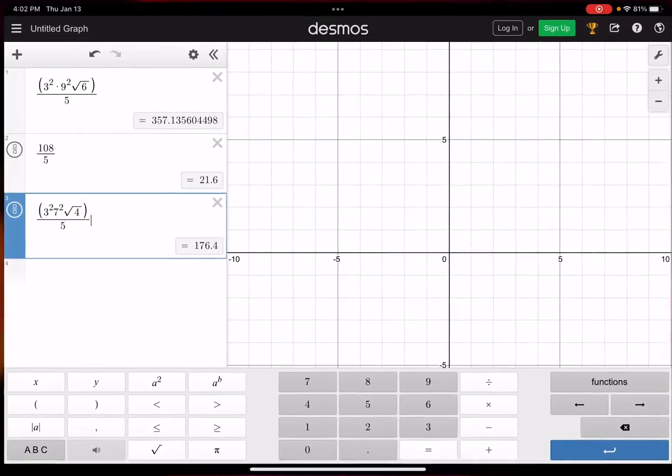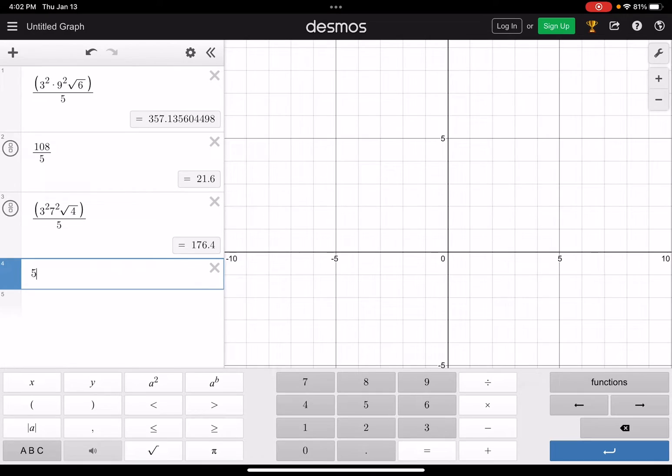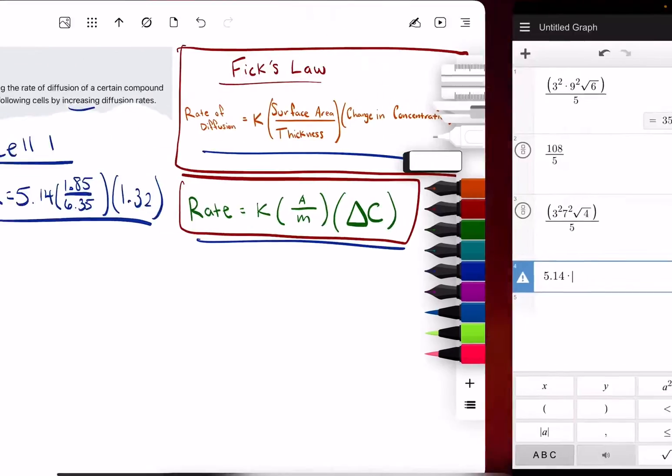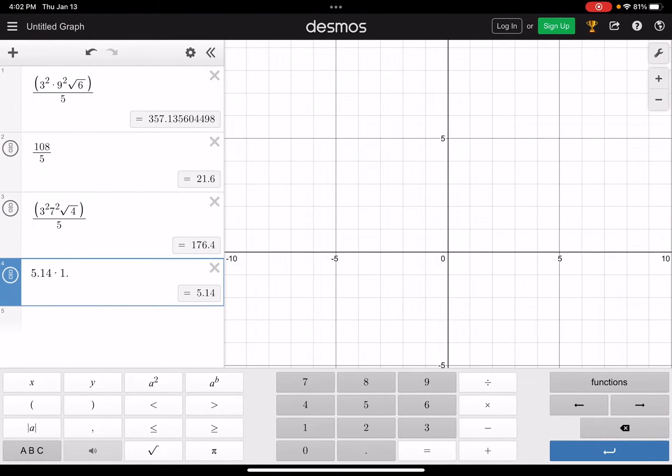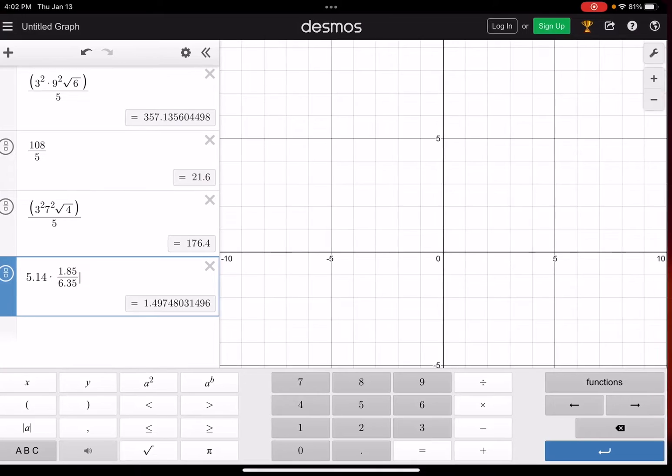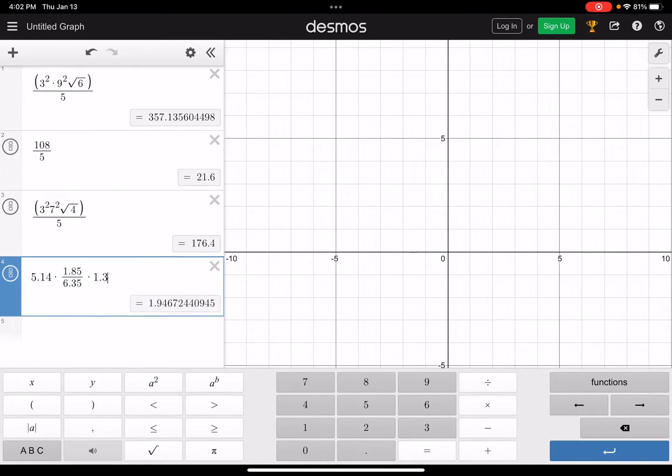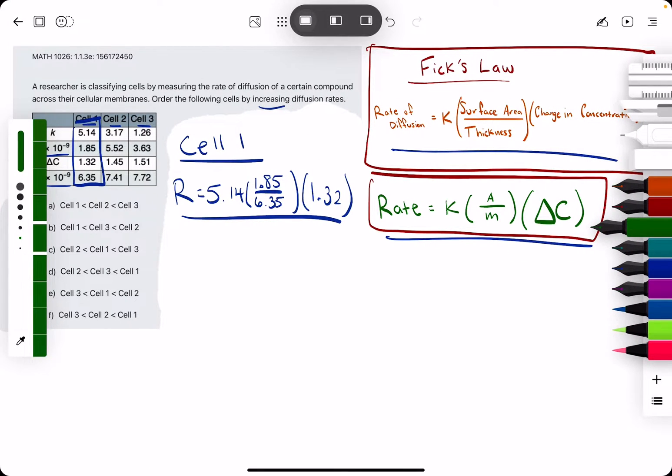Let's open up Desmos and get started. We're just plugging this in to get some decimal value here: 5.14 times 1.85 divided by 6.35 all times 1.32, and that'll give us 1.98 if we round to two decimal places.